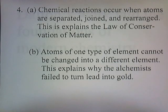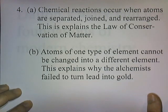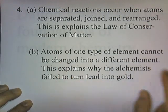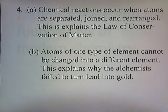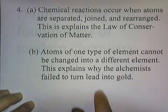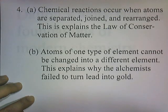Chemical reactions occur when atoms are separated, joined, and rearranged. This explains the law of conservation of matter — the reason the amount of mass you start with equals the amount you end with is that atoms in a chemical reaction are just coming together and falling apart; they're not appearing or disappearing. Atoms of one type of element cannot be changed into a different element — you can't turn an oxygen atom into a hydrogen atom, or lead atoms into gold atoms. This explains why the alchemists failed to turn lead into gold. The alchemists were following Aristotle's lead that you could turn one type of matter into another, but Dalton's theory says no, you can't do that.